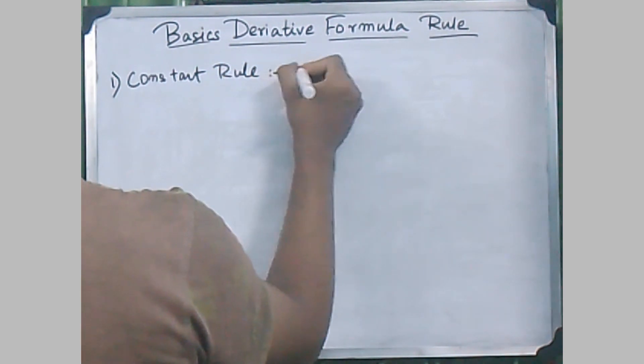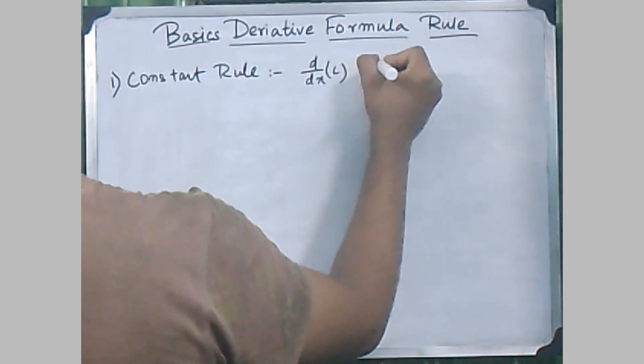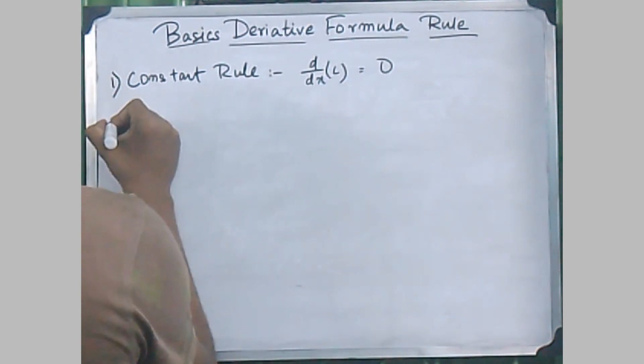The first rule is known as the constant rule, where d/dx of c, where c is constant, will result to 0.